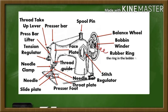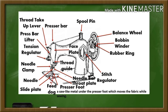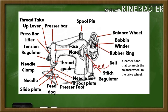Rubber ring in the bobbin winder. It controls the winding of the bobbin. Feed dog. It is a saw-like metal under the presser foot which moves the fabric while sewing. Next is the belt. It is a leather band that connects the balance wheel to the drive wheel.